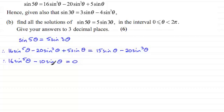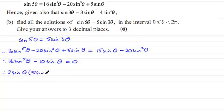To solve this, I notice that 2sinθ is a common factor, so we pull out 2sinθ, giving 2sinθ times (8sin⁴θ minus 5) equals 0.